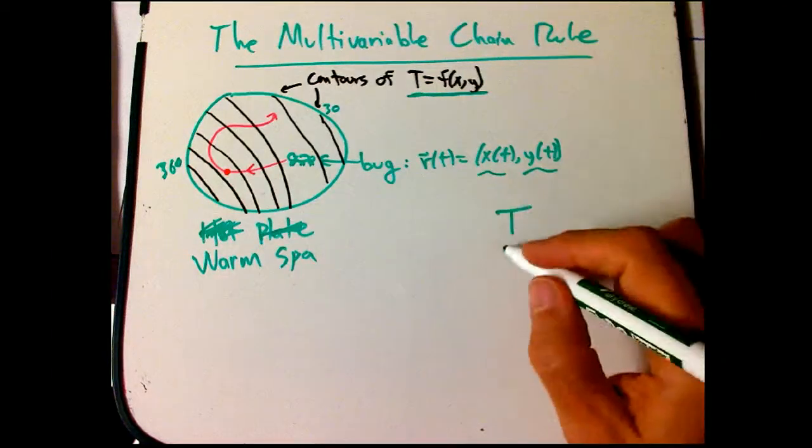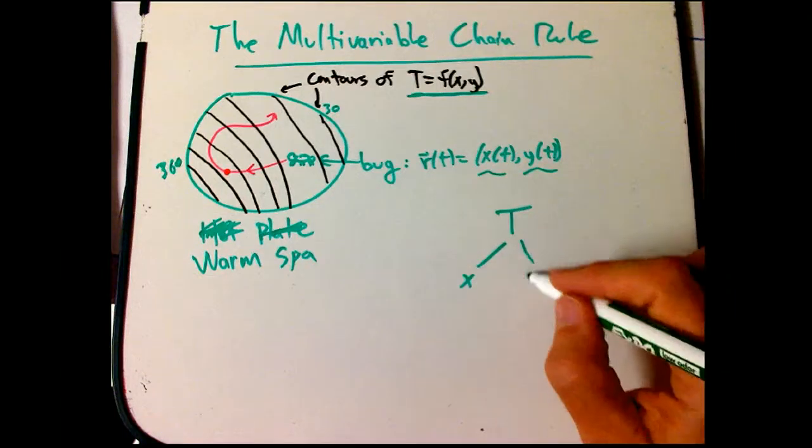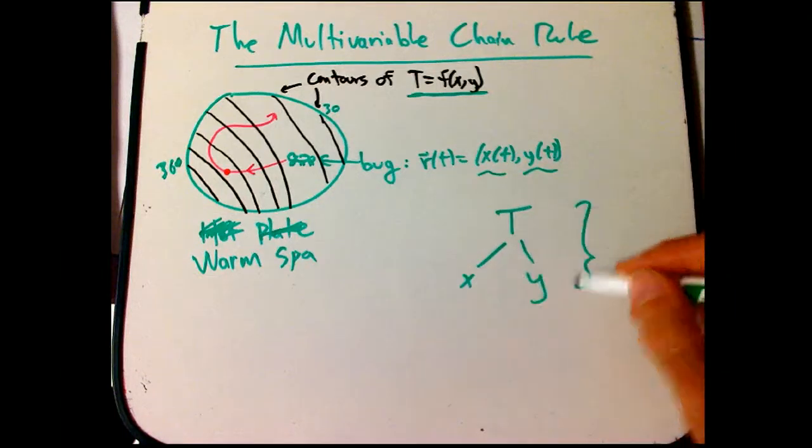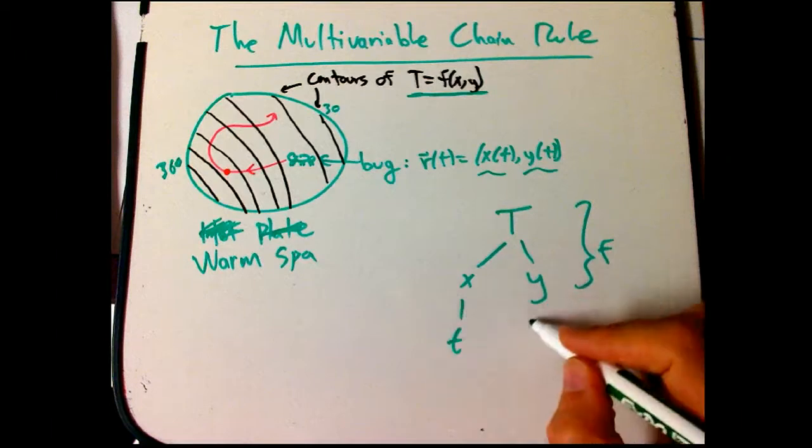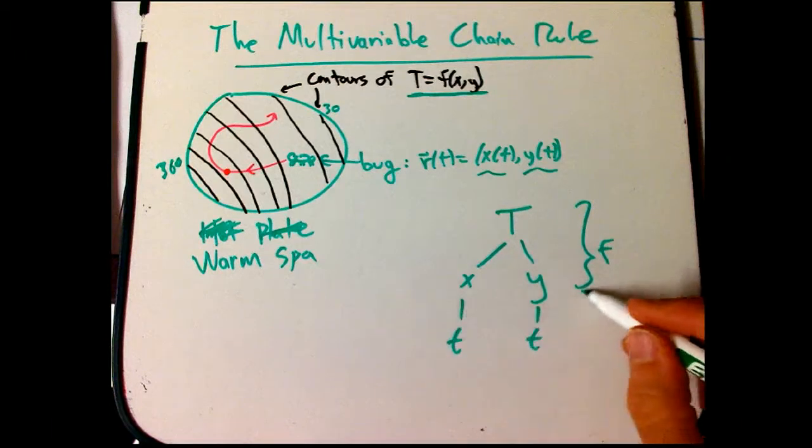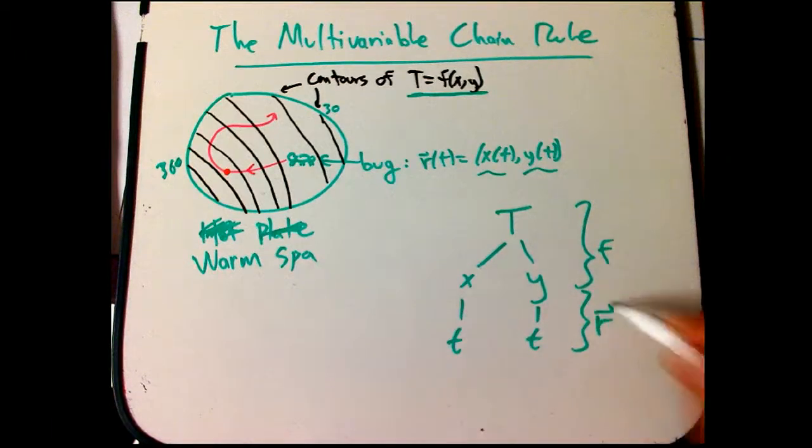The temperature depends on these two variables, x and y, through the function f. And then x and y both depend on t through this function, the position function, the r function.